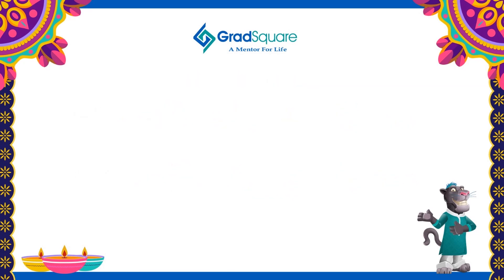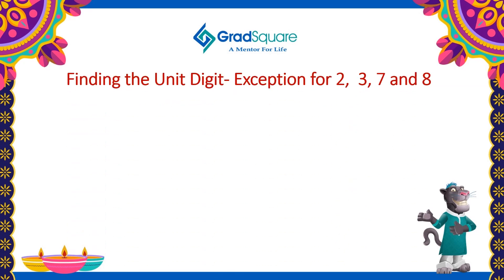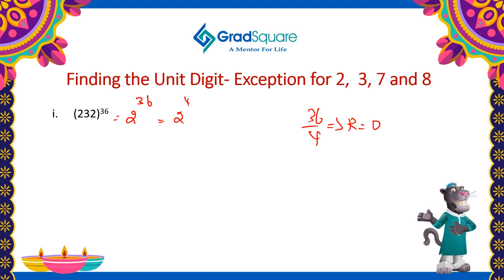There is an exception while finding the unit digit of the numbers ending with 2, 3, 7 and 8 using the cyclicity concept. In this example, 2 is raised to the power 36. The cyclicity of 2 is 4. When 36 is divided by 4, the remainder is 0. Whenever the remainder is 0, it must be replaced by 4. So this is equal to 2 power 4, which is equal to 16. The unit digit of the resultant will be 6.